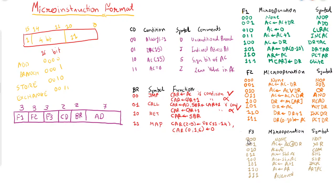Field 3 also has 3 bits, giving 8 combinations: 000 = NOP; 001 = AC ← AC XOR DR; 010 = complement AC; 011 = shift left AC; 100 = shift right AC; 101 = increment PC; 110 = PC ← AR (address register to program counter); 111 = reserved (not specified).